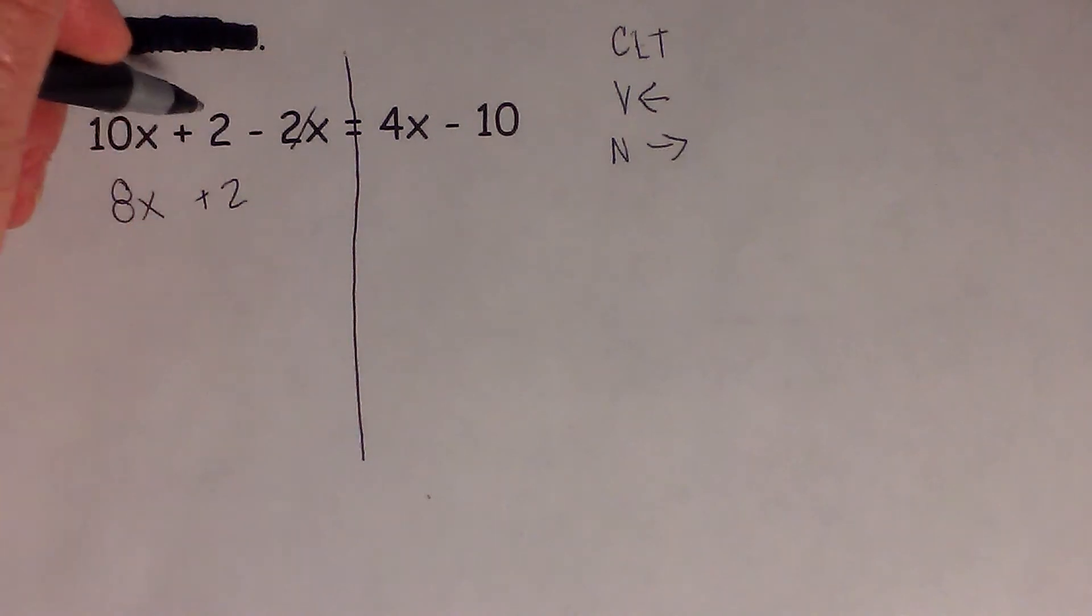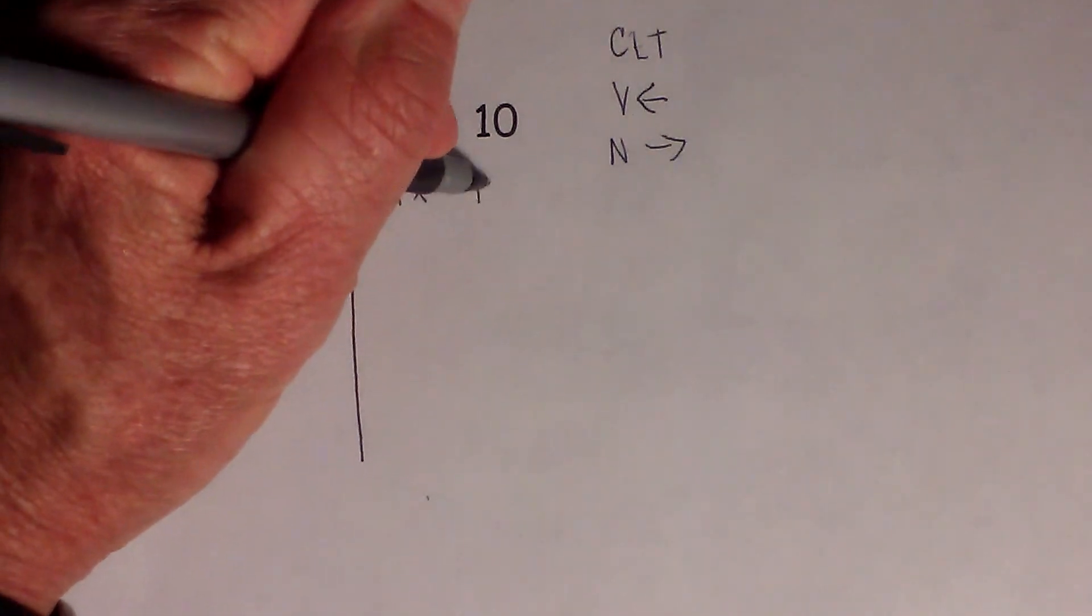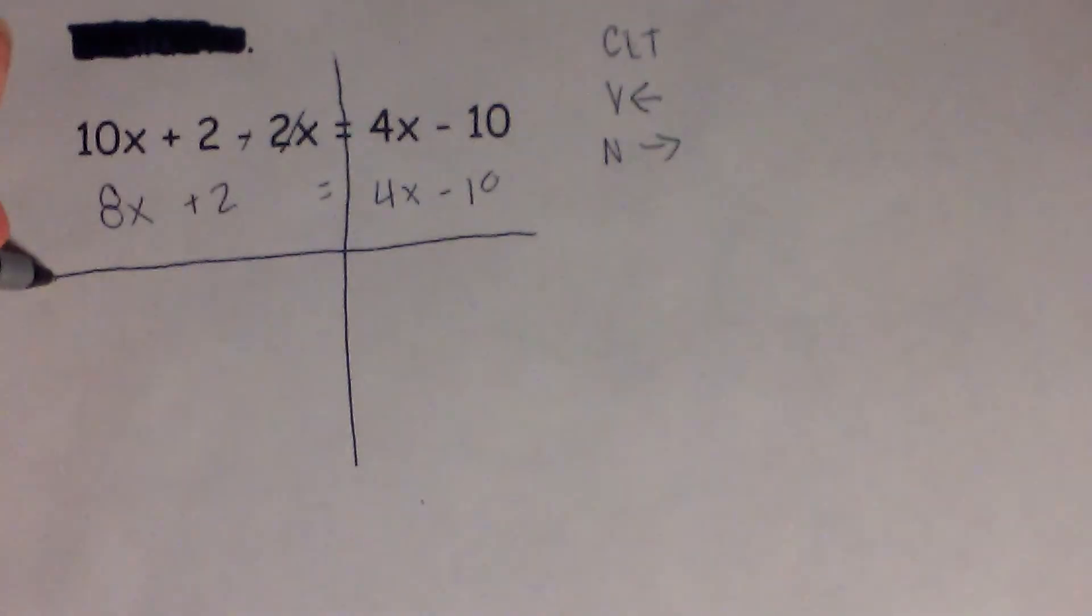And remember we've moved this, equals 4x minus 10. Let's draw another line, and this helps organize it.